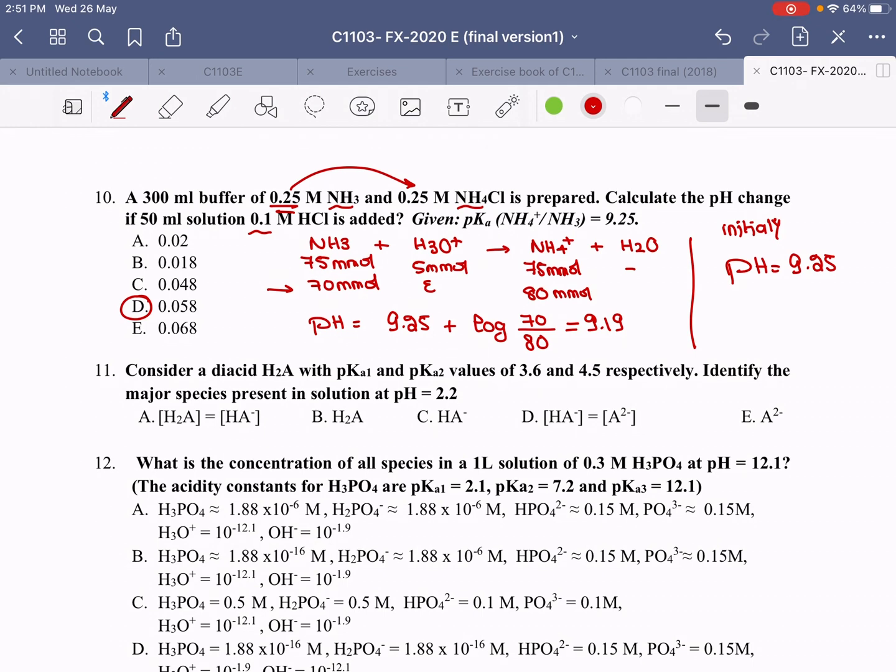Number 11. Consider a diacid H2A with 2 pKa's with 3.6 and 4.5 respectively. Identify the major species at pH 2.2. Let's write the predominance.